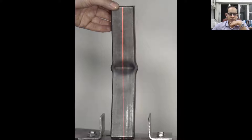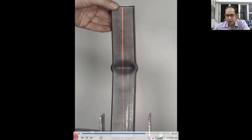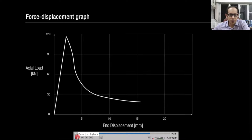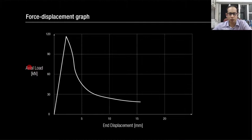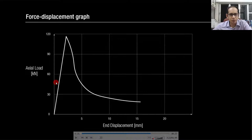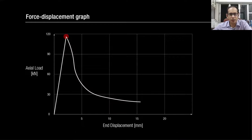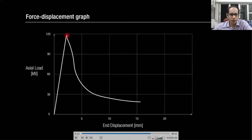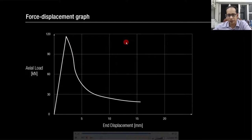Looking at the specimen after testing, the center line shows necking once the critical load is exceeded. On the load-displacement curve — axial load on the y-axis and displacement at the top on the x-axis — initially behavior follows PL over AE. Upon reaching the critical load, the load suddenly drops while deflection increases sharply. This is the point where the column buckles and becomes unstable.